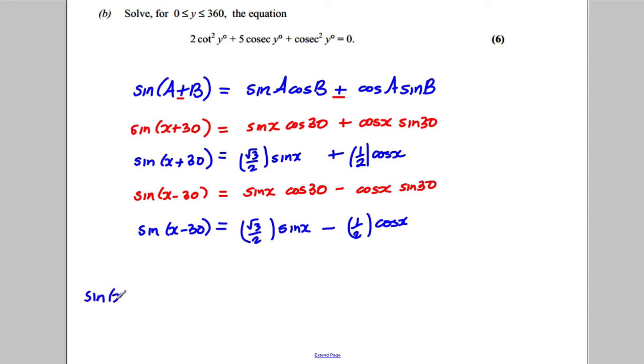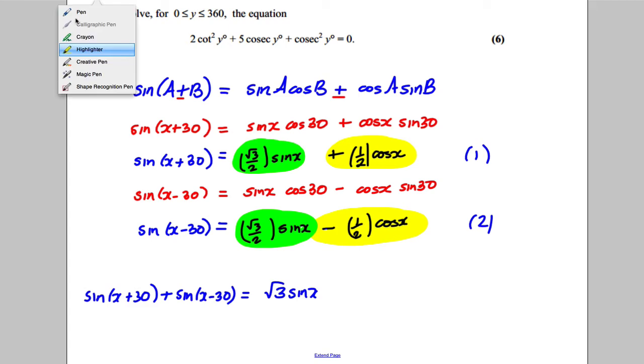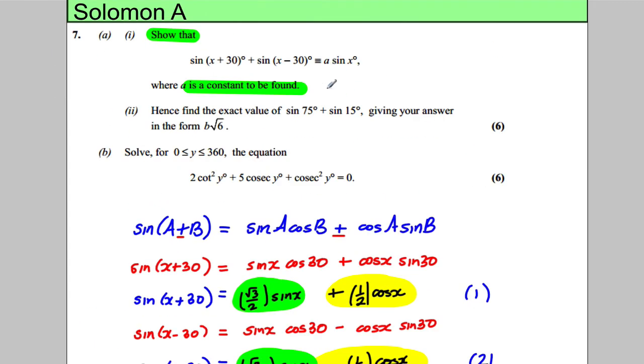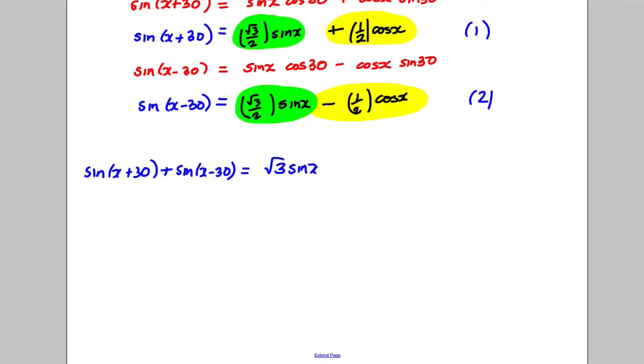Therefore, sine of x add 30 and we're adding sine of x subtract 30. We're just adding these two lines here. When we add them, this root 3 over 2 sine x plus another root 3 over 2 sine x would just be root 3 sine x. And what happens when we add the cosine terms? We've got a half cosine x subtract a half cosine x, so there'd be nothing. Therefore, it would equal root 3 sine x. So we found our a. Our a is equal to root 3.